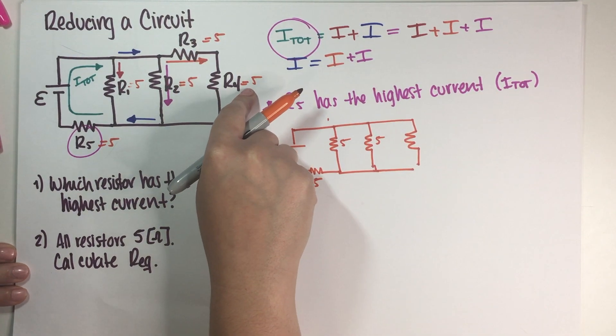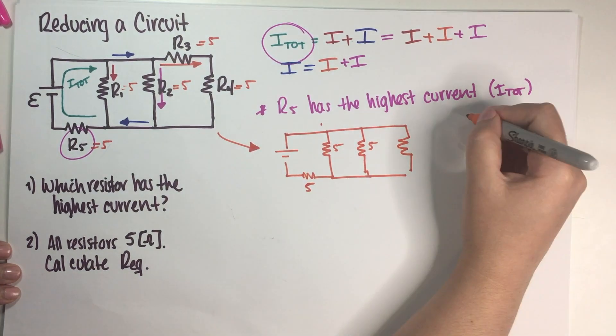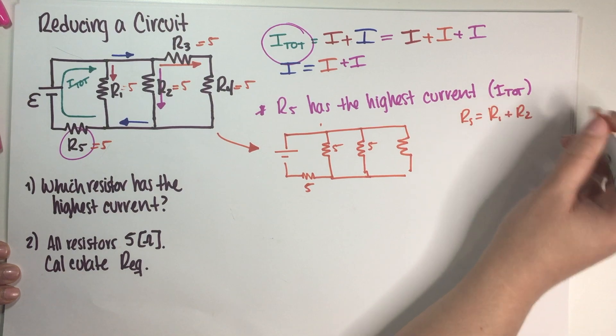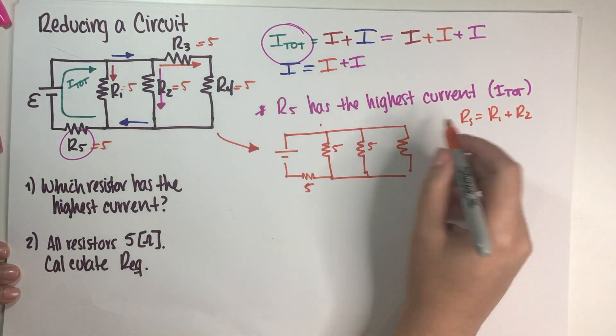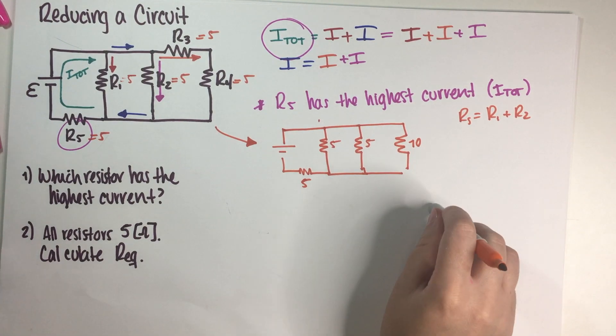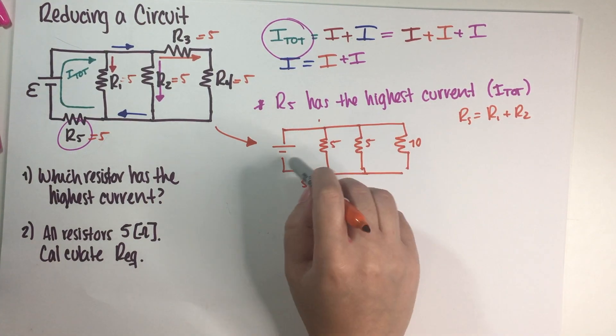Now let's just remember that our equation for R in series is just adding them up. So if these are two 5s, then this is a 10.